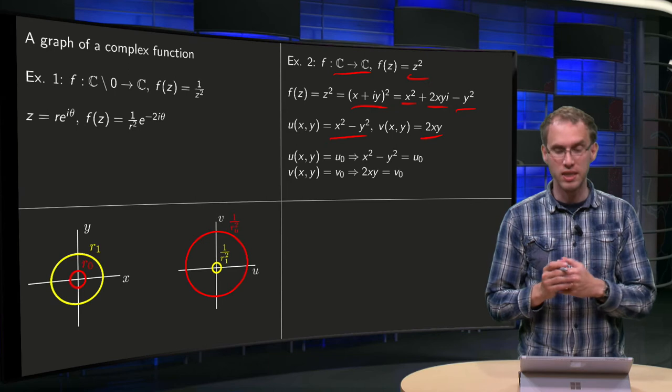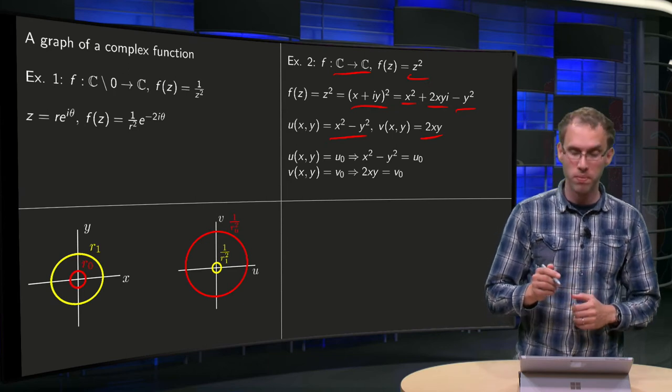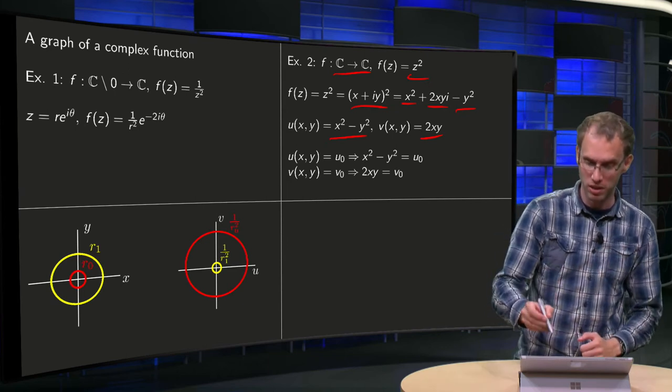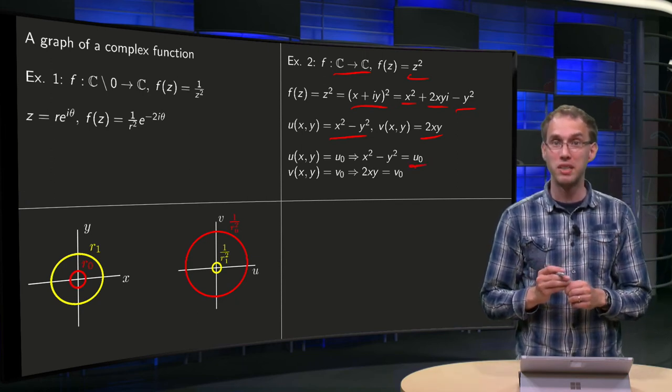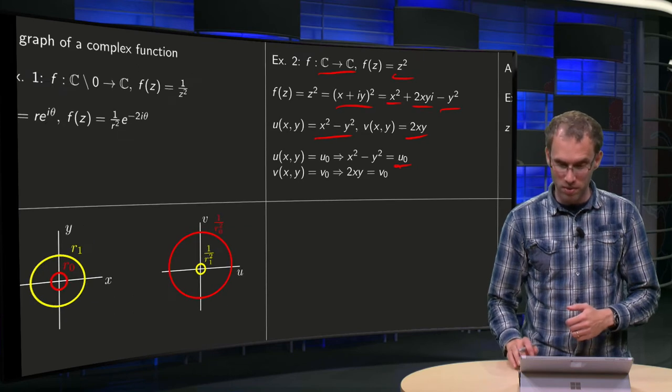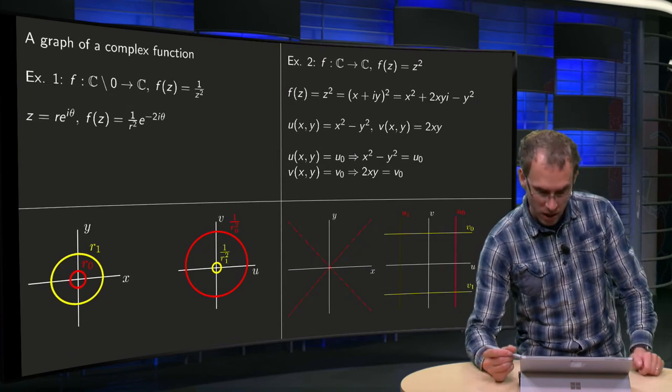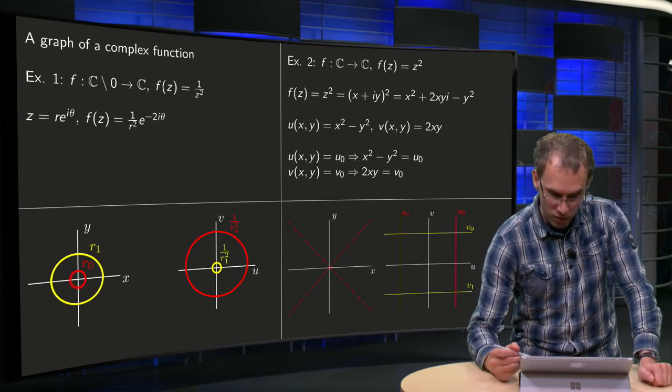We are going to set first u constant and then we are going to set v constant. Well, if we set u constant, we have x² - y² = u0. Well, those look like hyperbolas, so in the xy plane.